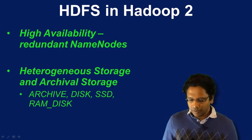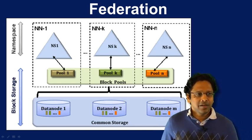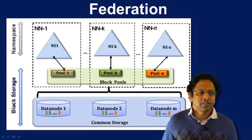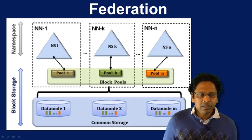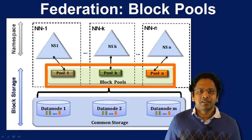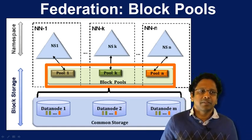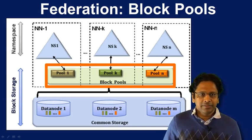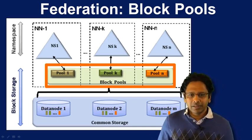Looking at a quick federation diagram: in the original design you had one namespace and a bunch of data nodes. Now you have a bunch of name nodes instead of one, and each name node writes into its own pool, but the pools are spread out over the data nodes just like before — data is still spread in blocks over the different data nodes. The block pool is the main difference. Going forward, we'll stick to the original HDFS design to explain things in detail, but keep in mind scalability has been improved by the federated approach. That concludes this HDFS video; the next video will look at scheduling improvements in the next generation of Hadoop.